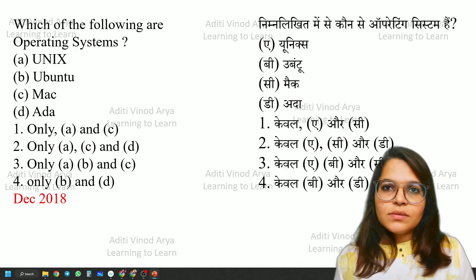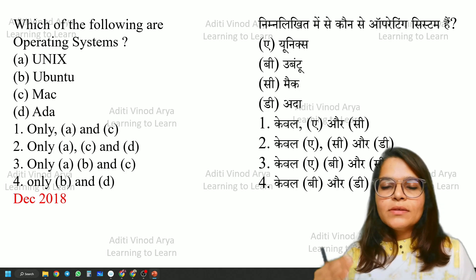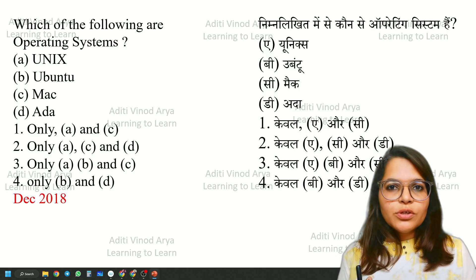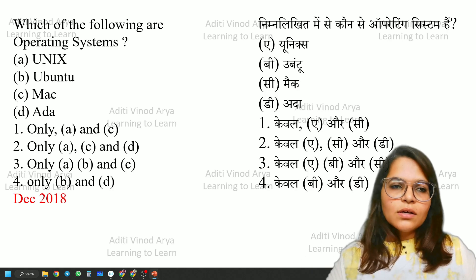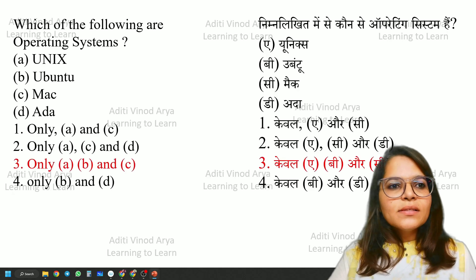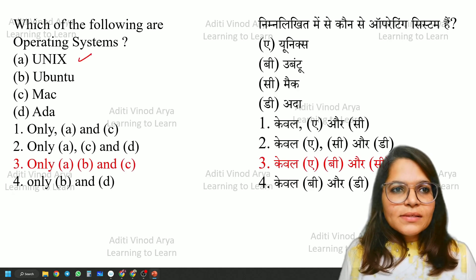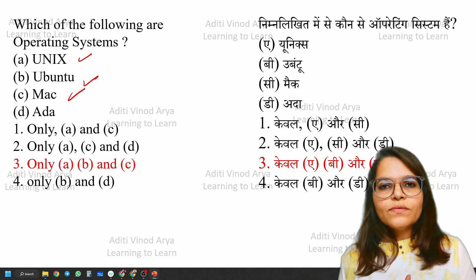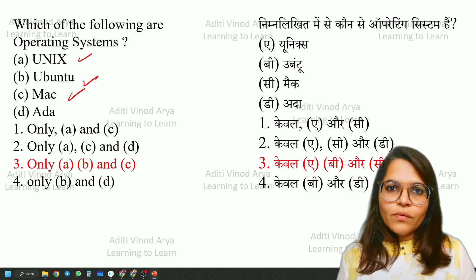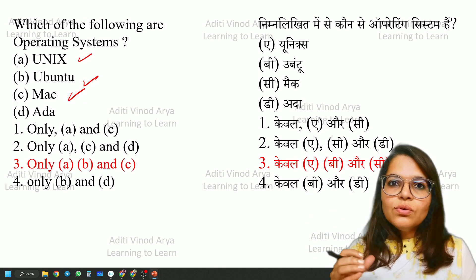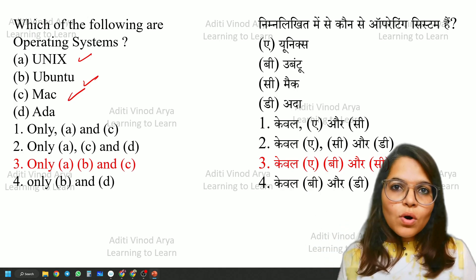Which of the following are operating systems? An operating system is the basic software of any computer. Make sure you watch the revision session to get a clear picture of ICT. Unix, Ubuntu, and Mac are the correct answers — A, B, and C are operating systems. You need a clear categorization of software: system software, application software, operating systems, and device drivers.